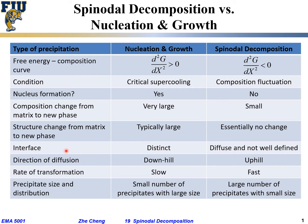In terms of the existence of a distinct interface, for nucleation and growth the interface is very distinct or very sharp between the matrix phase and the new or precipitated phase. For spinodal decomposition, the interface is diffuse and not really well defined — you find a gradual transition from one region to the other, and it is difficult to pinpoint where it is or even confirm its existence at the very beginning.